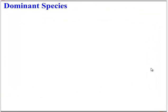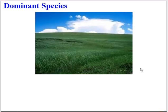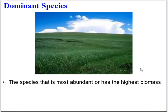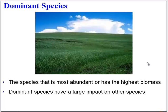Let's look at some other biotic factors that can affect ecosystem dynamics. One is the dominant species. Within ecology, 'dominant' refers to the species that is most abundant or most numerous. In a terrestrial ecosystem, this is often a producer, and it has a large impact on other species.